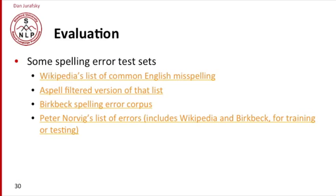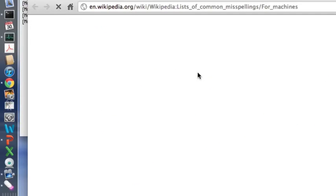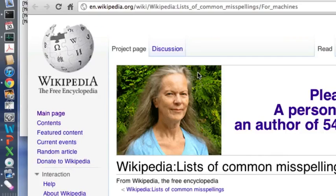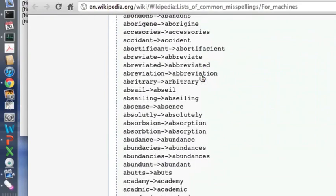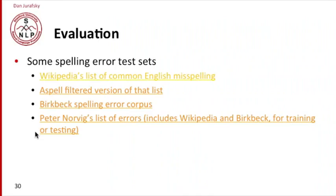How are we going to evaluate these noisy channel and other kinds of models? There are lots of good spelling error test sets. Wikipedia has a list of common English misspellings. There's a filtered version of that at ASPELL. There's a spelling error corpus at Birkbeck.